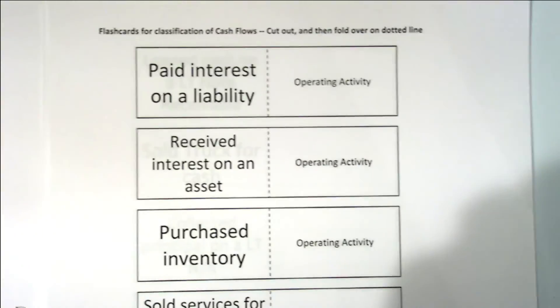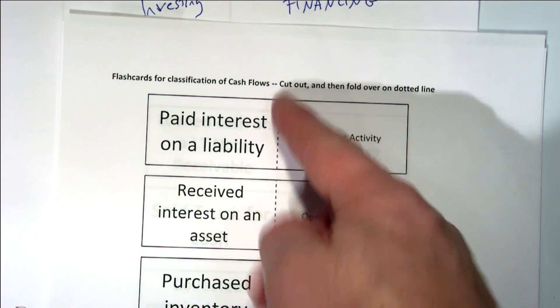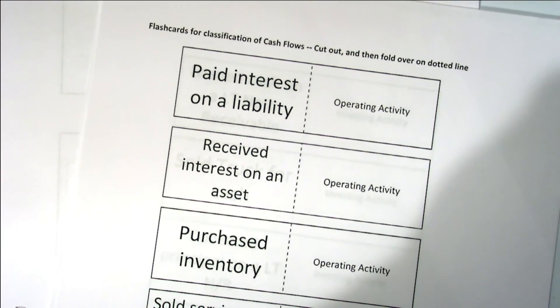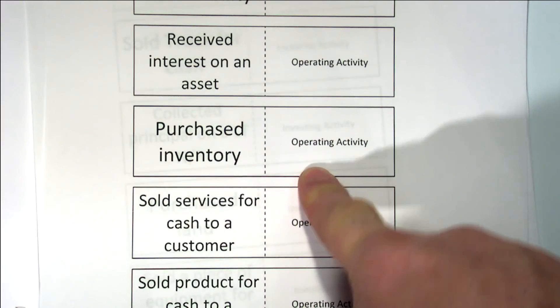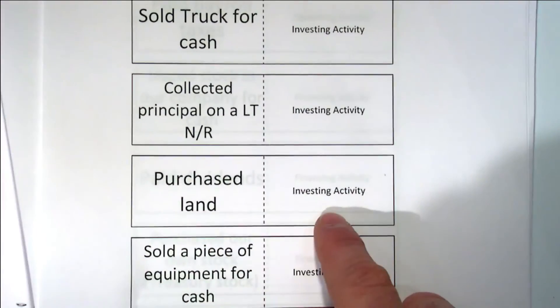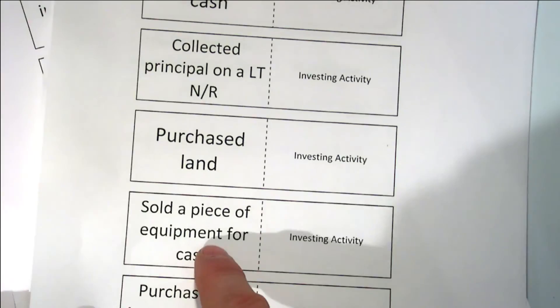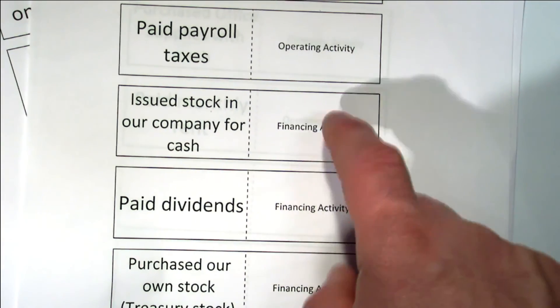I've made some elementary flashcards for you. You can cut these out, fold on the dotted line, and you've got a set of flashcards — or copy the information onto index cards. For example: purchasing inventory happens every day, so that's an operating activity. Purchasing land is an investing activity — it's a long-term asset. Selling a piece of equipment is an investing activity. Paying dividends is a financing activity. Issuing stock in our company for cash is a financing activity.